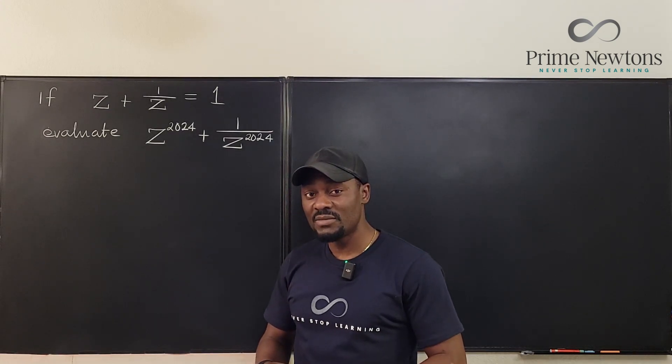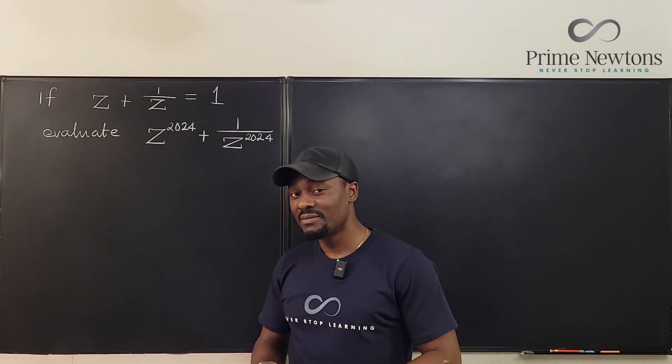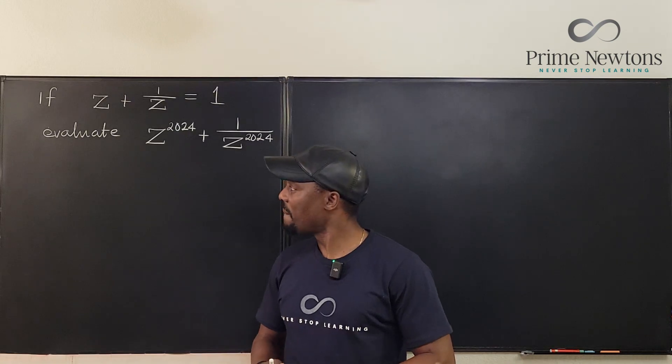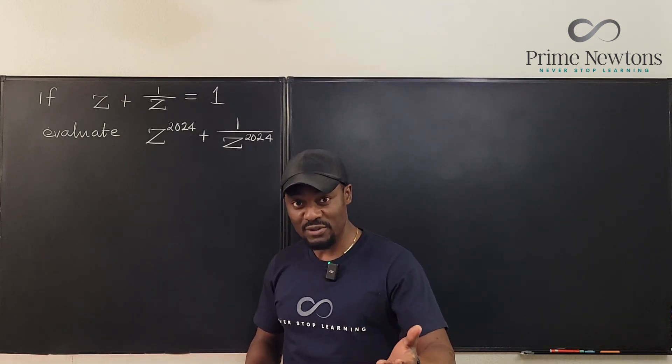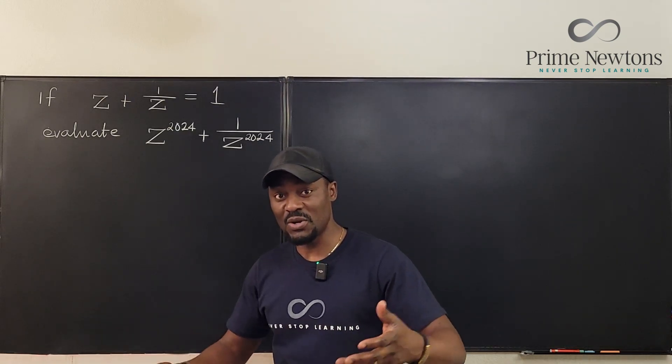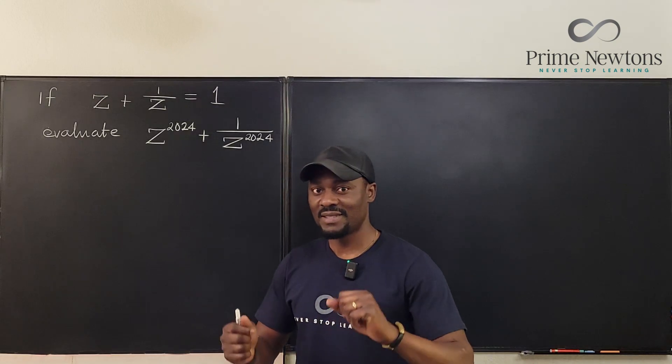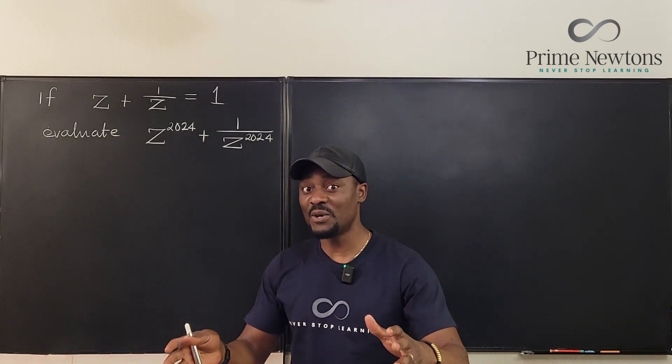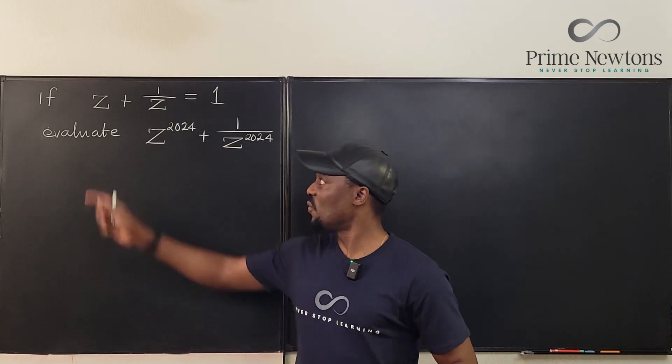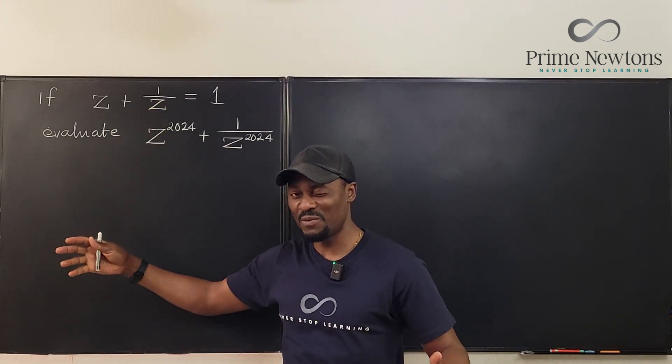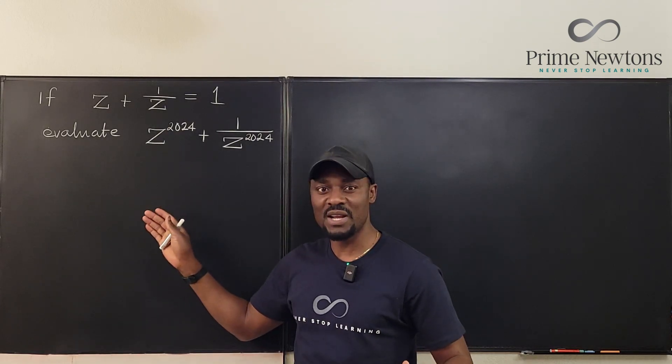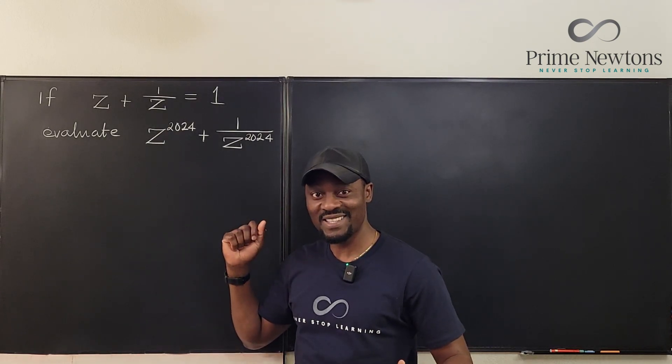The second option is to use the whole idea of complex numbers, rewrite it and use Euler's equation. But that means you have to know complex variables or complex analysis. But I want it to be as general as possible. So we're not going to use either of those two, even though we could solve this as a quadratic. We're just going to play with the algebra and see where it leads us.